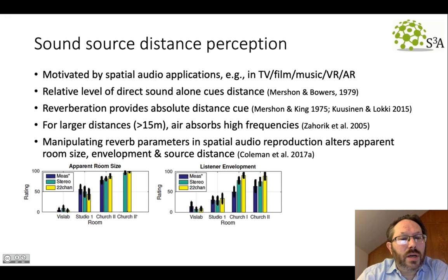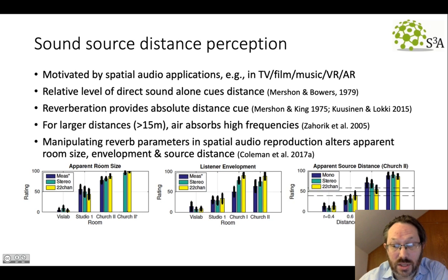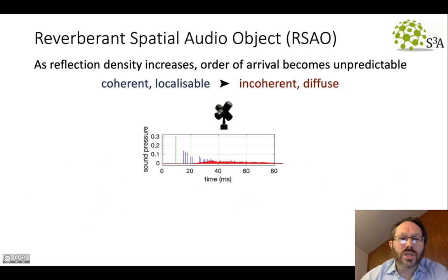But we were motivated by the fact that varying reverb parameters in spatial audio reproduction has the capability to modify the apparent room size, envelopment and source distance. And what we wanted to investigate was whether directly encoding parameters from real rooms at a range of different distances could show that those parameters are capable of encoding that distance information.